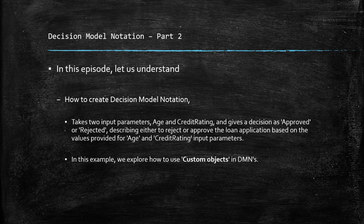In this part 2 of the Decision Model Notation, we will explore how to use custom objects in a Decision Model Notation. So without further ado, let's create the example and look at how we can use custom objects while creating DMNs.